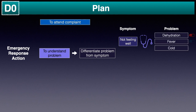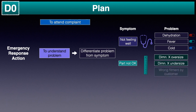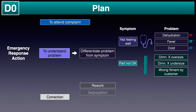This will enable the doctor to give treatment and medicines accordingly. Same way, if a customer reports a complaint as 'part not okay,' the supplier won't be able to fix the problem. Hence the supplier will need to do inspection and measurement to understand whether the problem is of a certain dimension — if the problem is oversize, undersize, or if wrong fitment was done by the customer. After differentiating the problem from symptoms, corrections such as rework, segregation, rejection of parts, or first aid against an injury are applied to correct the situation.